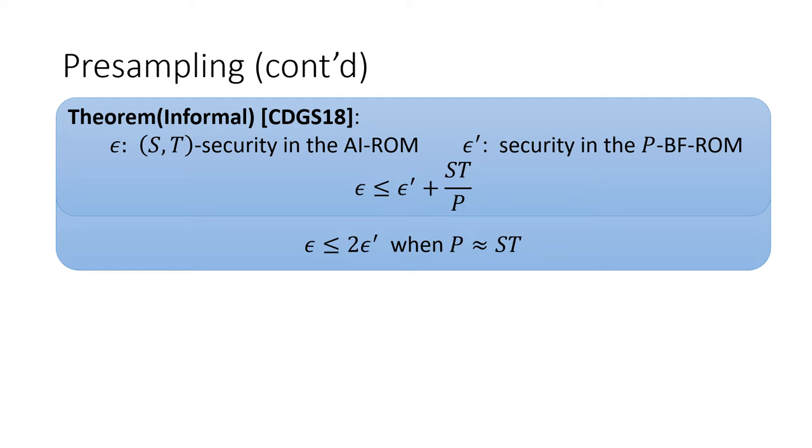Note that the first bound is additive and therefore works better with indistinguishability games. The second bound is multiplicative, which works better with unpredictable games.